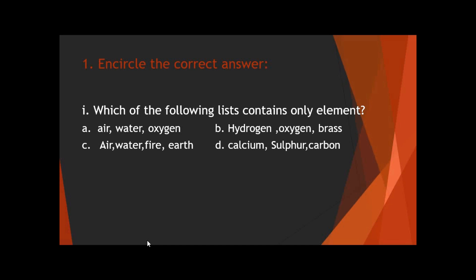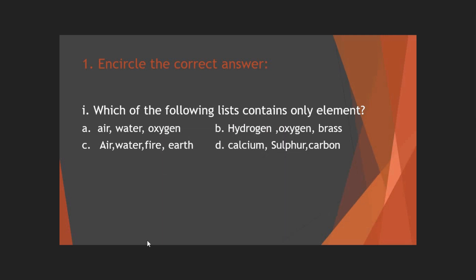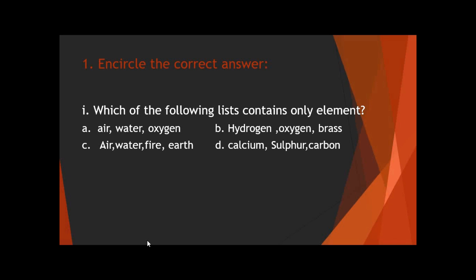In option A we have air, water, and oxygen. Air is a mixture — you learned in the mixture topic that air is a mixture, not an element. Water is a molecule. Oxygen is an element, but air and water are not elements, so A cannot be correct. In option B we have hydrogen, oxygen, and brass. Hydrogen and oxygen are both elements, but brass is an alloy of copper and zinc, so it cannot be an element and B is incorrect.